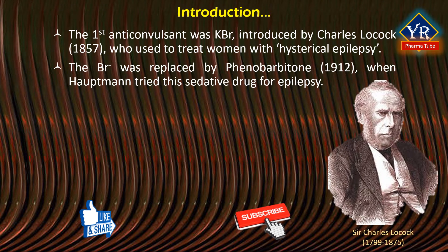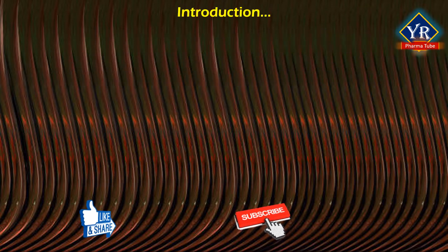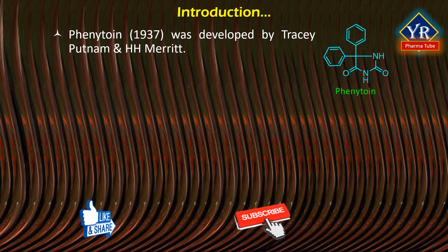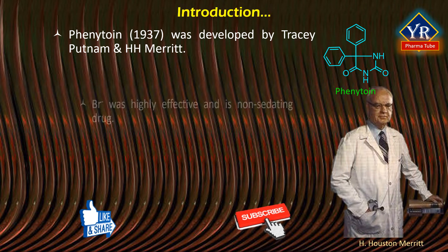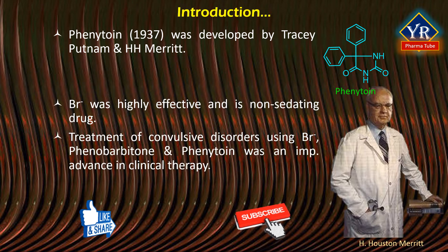Bromide was largely replaced by phenobarbitone in 1912, when Hauptmann tried this sedative drug in epilepsy, and its great value was recognized at once — it is still commonly prescribed. The usefulness of both bromide and phenobarbitone was discovered by chance, serendipitously, but phenytoin was developed in 1937 as the result of a systematic study of potential anti-epileptic drugs in animal models by Tracy Putman and H. Houston Merritt. Treatment of convulsive disorders using bromide, phenobarbitone, and phenytoin constitutes an important advance in clinical therapy.